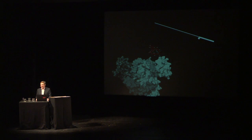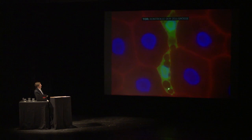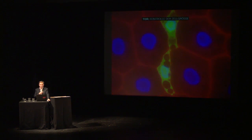Now, once we had the TOR protein, how did we understand what its function is? How did we understand that its role is to control cell growth? Here's an experiment done in the laboratory of a colleague in America, Tom Neufeld, a professor in Minnesota who works with Drosophila. This is the liver of a fruit fly — so flies have livers, in case you didn't know. What he did was to selectively inactivate TOR in two cells, and what you can see is these cells end up being much smaller than the neighboring wild-type cells. The obvious interpretation is that the role of TOR is to control cell growth and thereby cell size.